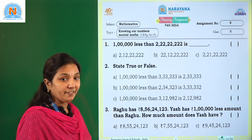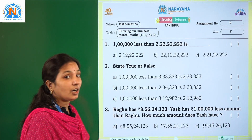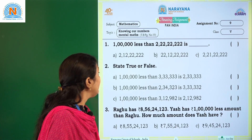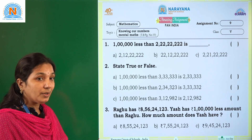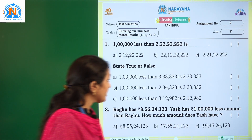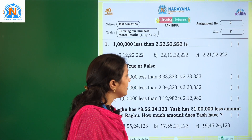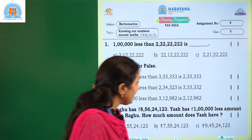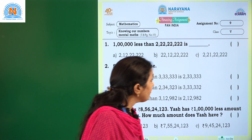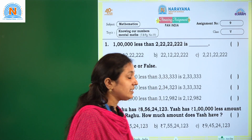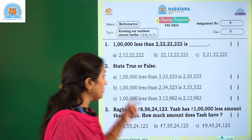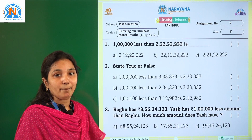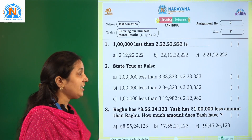So here options are also given. The option A is 2 crore 12 lakh 22,222, and option B is 22 crore 12 lakh 22,222, and option C is 2 crore 21 lakh 22,222. So here what we have to do? We have to take away 1 lakh from the given number.